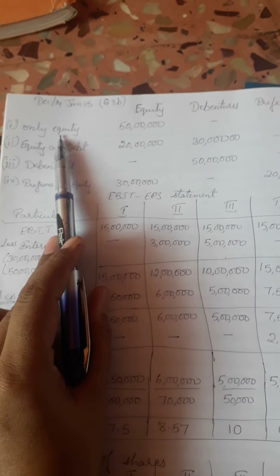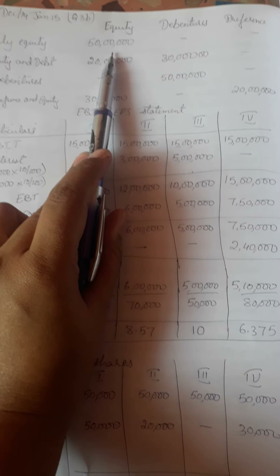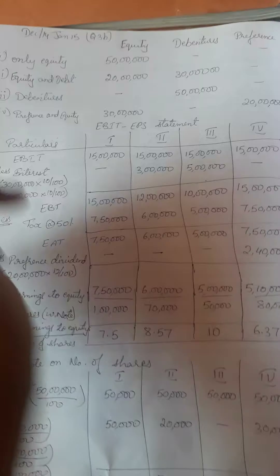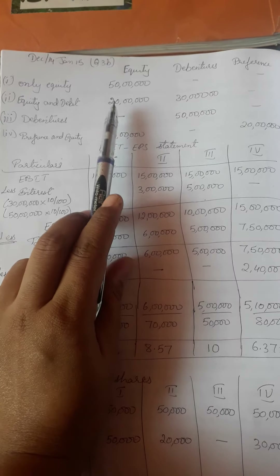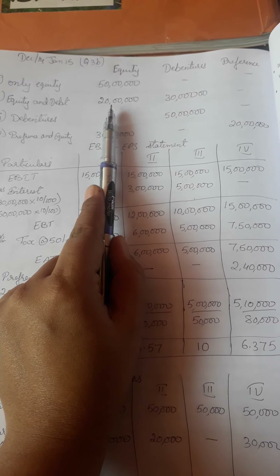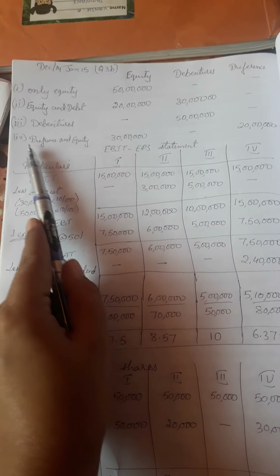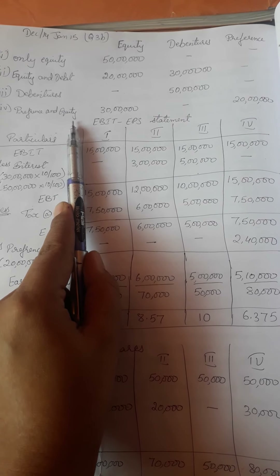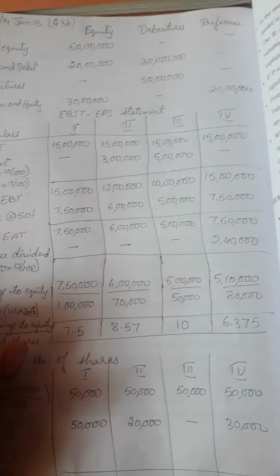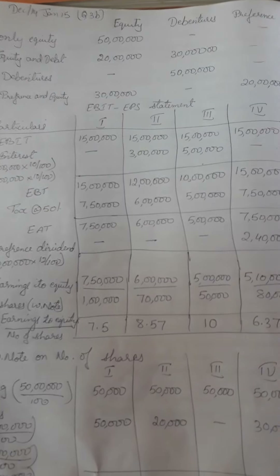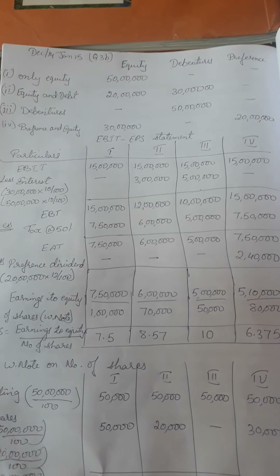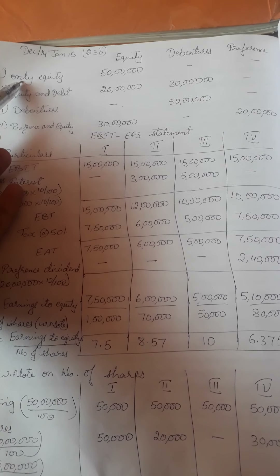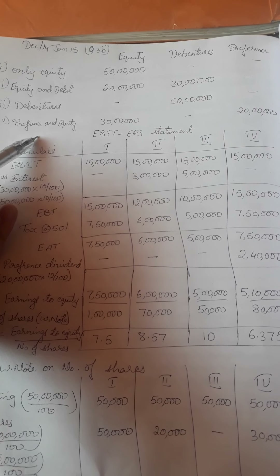Option one is only equity — full 50 lakh through equity. The company already has 50 lakh and now wants another 50 lakh. Option two is equity and debt — 20 lakh through equity and remaining 30 lakh through debentures. Option three is entirely through debentures — full 50 lakh. Option four is preference and equity — 30 lakh through equity and the balance in preference shares. We have to select the best option from these four.